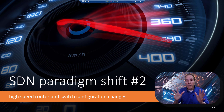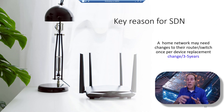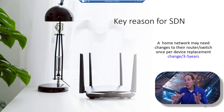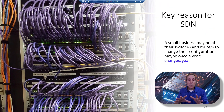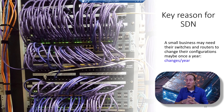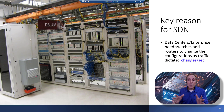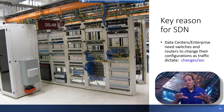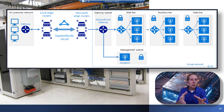The second paradigm shift is high-speed router and switch configuration change. At home you might change your router configuration every two to five years. A small business might change switch configuration once a year. But in a data center or enterprise, you may need to change switch and router configurations multiple times per second. SDN allows applications and services to make those changes per second — for example, when a tenant spins up new containers and virtual machines, all virtual networks can be set up in milliseconds.